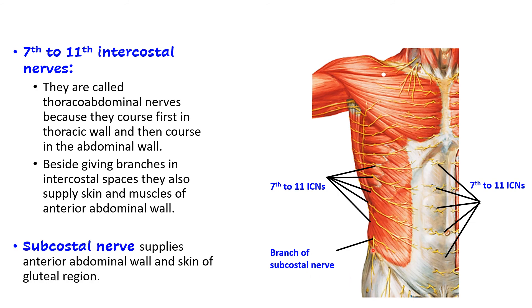The subcostal nerve supplies not only the skin of the anterior abdominal wall but also the skin over the gluteal region.